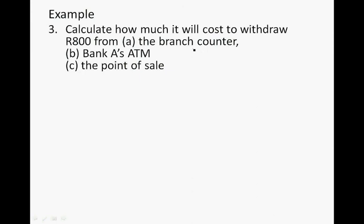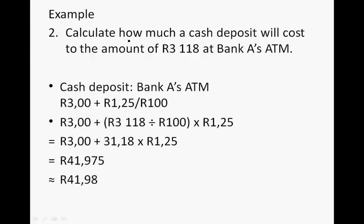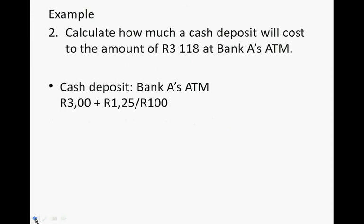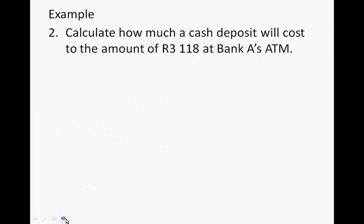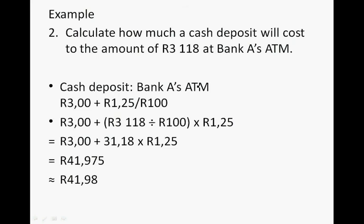Going back to compare: if I deposit R3,118 at Bank A's ATM, it costs R41.98. But for that same amount, I can only deposit R2,650 at the branch counter for the same cost. So by using the ATM, I can deposit R468 more for the same R41.98.